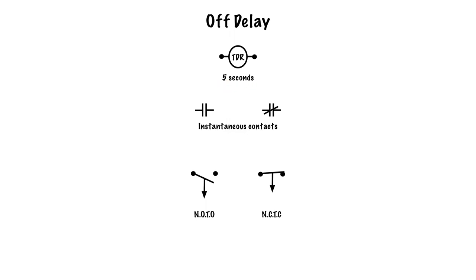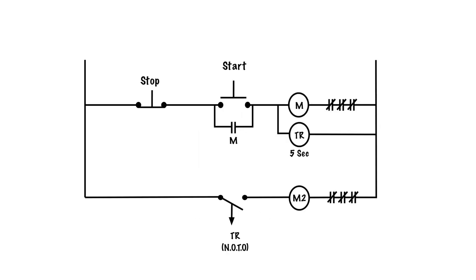After five seconds, the normally open contact opens and the normally closed contact closes — it times out. Now let's take a look at how this plays out in a practical circuit. Here we have a basic start/stop: a stop button, a start button, an M contact, an M coil, an M contact, and then a TDR coil in parallel with M. There are contacts associated with this coil and another motor.